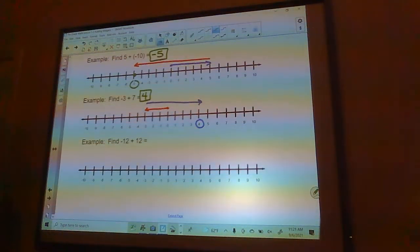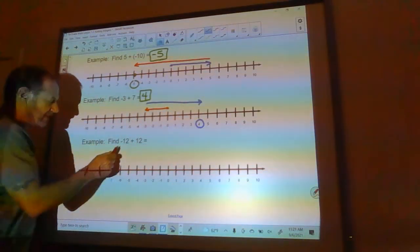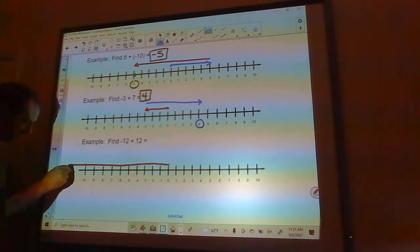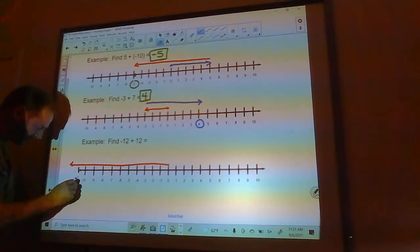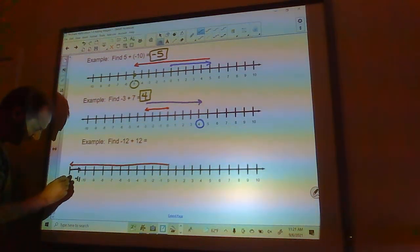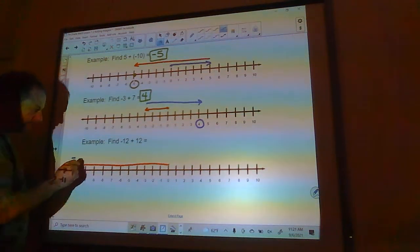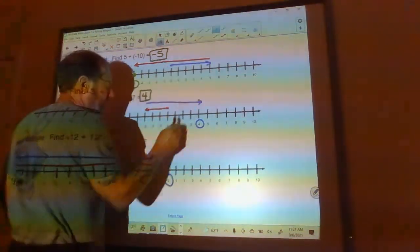Well check this out, additive inverses. So you should know the answer to this, but if we did use a number line, we've got negative 12, so we're going to go 12 to the left and we've got to extend this just a little bit here to make this work. So there's negative 11, there's negative 12, and then we're going to go back 12 and we end up at 0. So this is just 0.